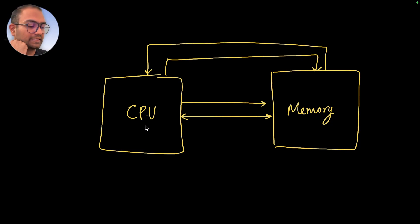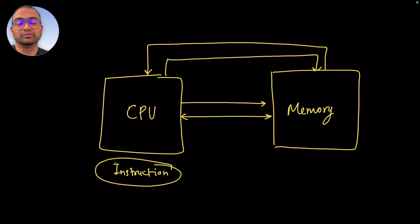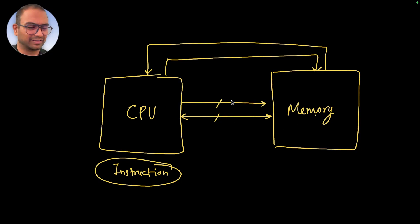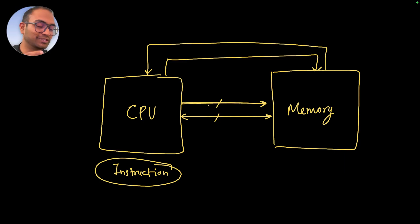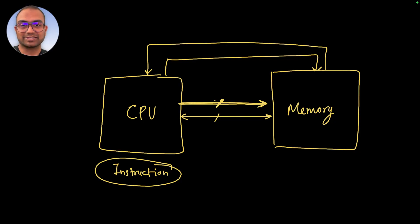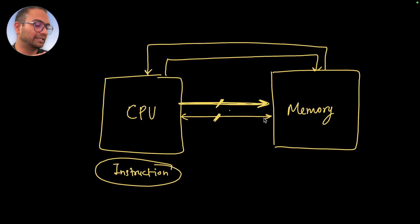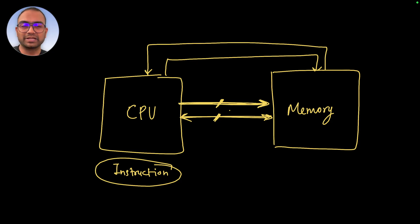A CPU essentially executes instructions — that's the only thing. It is connected to the memory via buses. A bus is a bunch of wires, and the slash in the diagram represents that there are many wires on which information goes from the CPU to the memory. The slash essentially means it's not one wire but many wires.